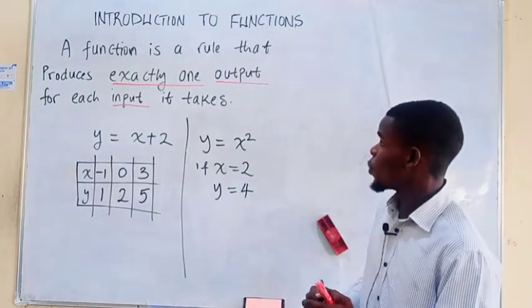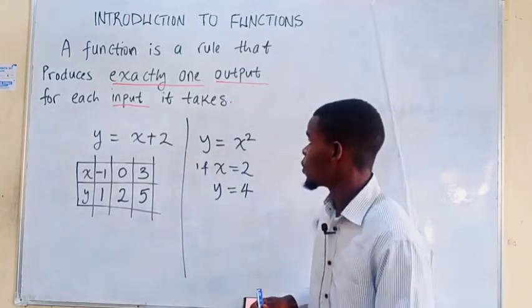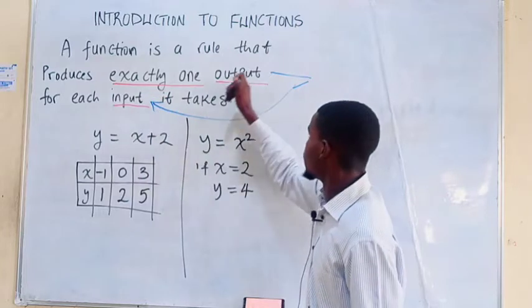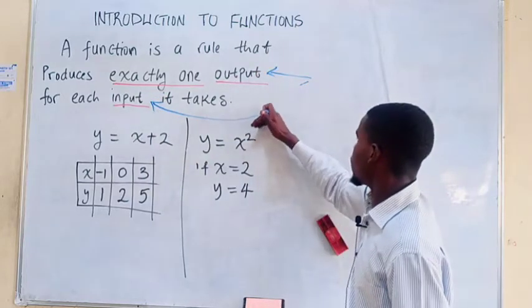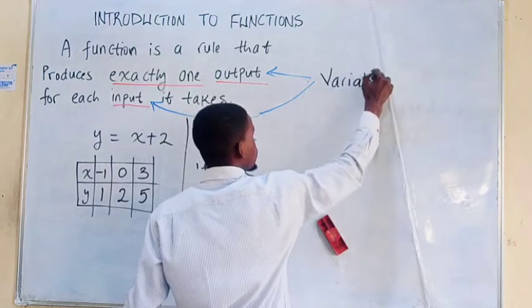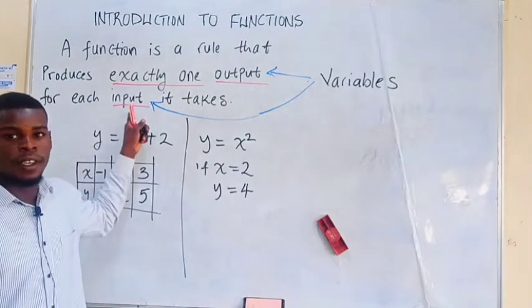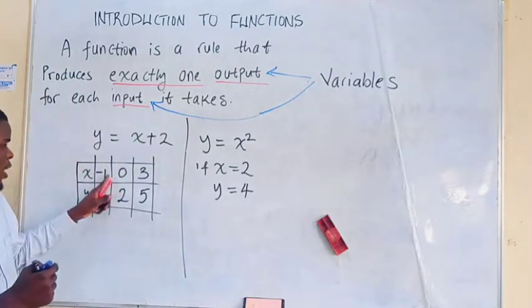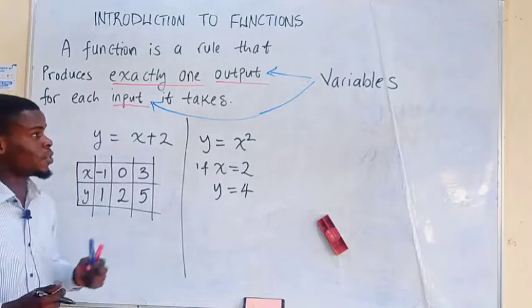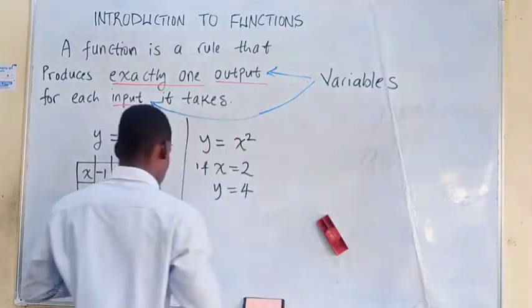So as I said earlier, now we want to talk about the output and the input, they are called variables. They are collectively called variables. The input here, what you input in, it changes. With time, we inputted negative 1. After some time, we inputted 0, and then we took 3. So that is why we call it variable. It varies according to the context.